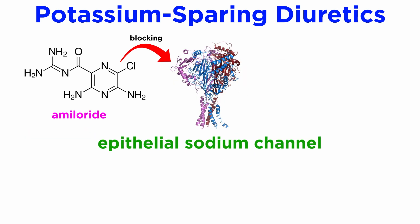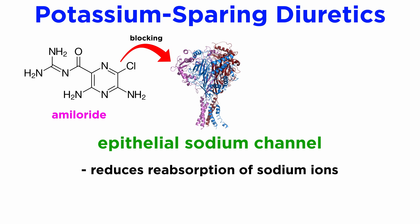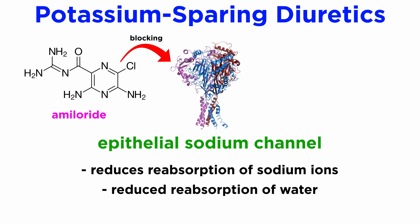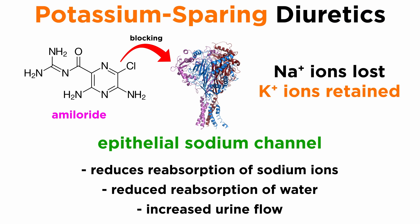ENaC blockers, such as amiloride, directly block the ENaC transporter, reducing the reabsorption of sodium ions, leading to the same lowered water reabsorption and increased urine flow. These drugs are known as potassium-sparing because they cause isolated loss of sodium ions while retaining potassium ions.